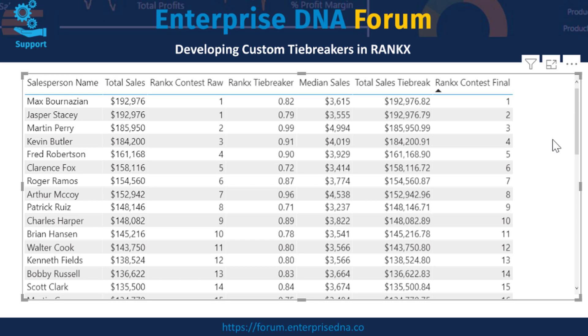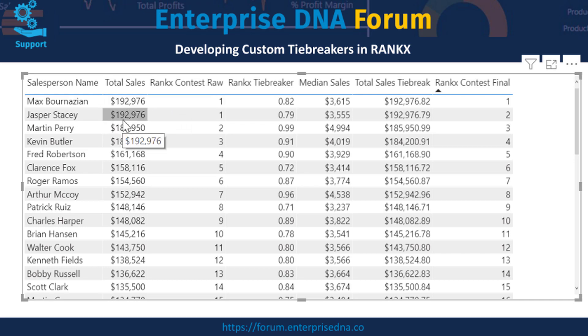If we even have a second or third tie, we can go out to the third and fourth decimal places by dividing by a thousand and continue adding tiebreakers as needed. In this case, the likelihood of having the same median and the same total sales is infinitesimally small, so one custom tiebreaker was sufficient.